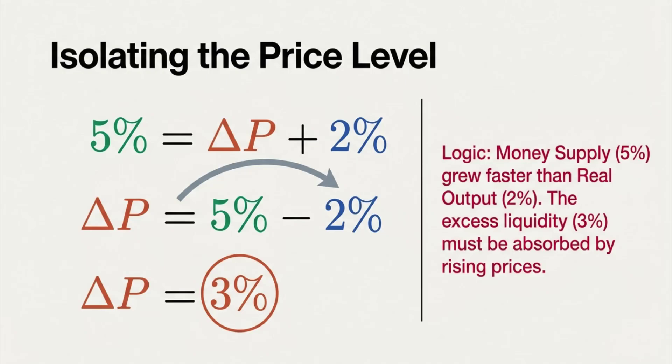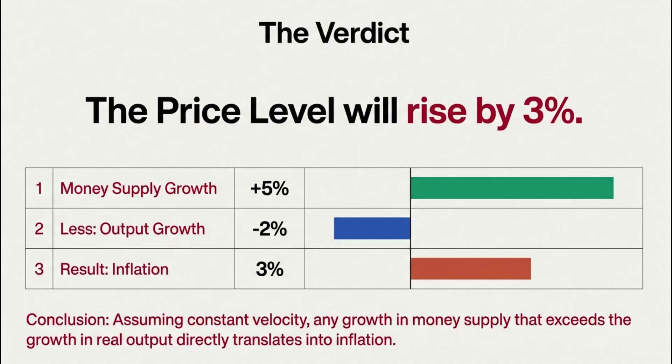and there it is. Delta P has to be 3%. So we did it. We solved for our mystery variable. We found the missing number. But what does a 3% change in P, the price level, actually mean? What's the verdict here?